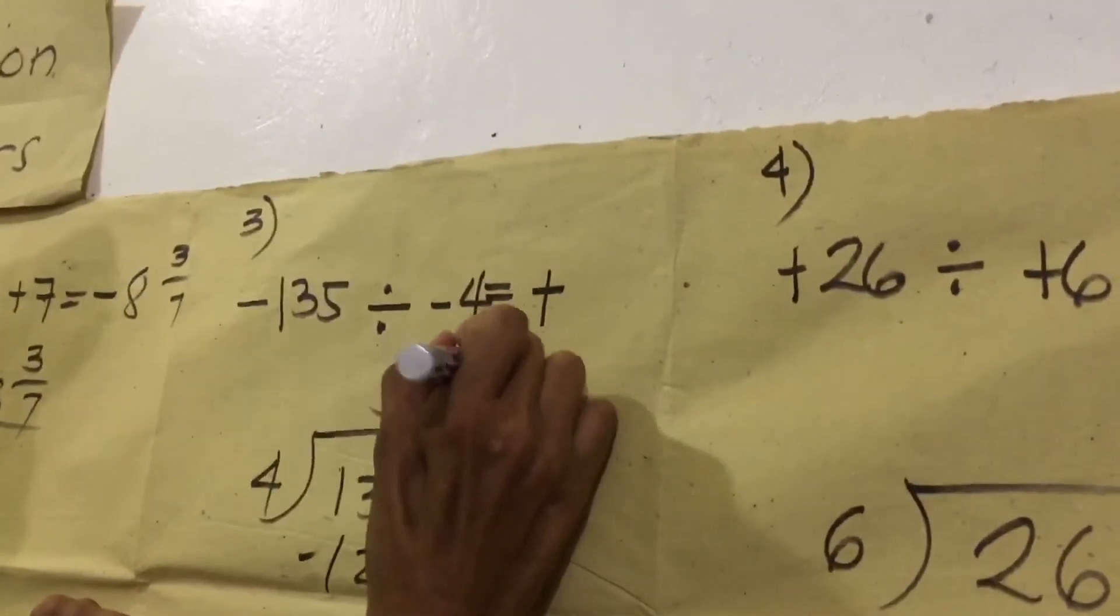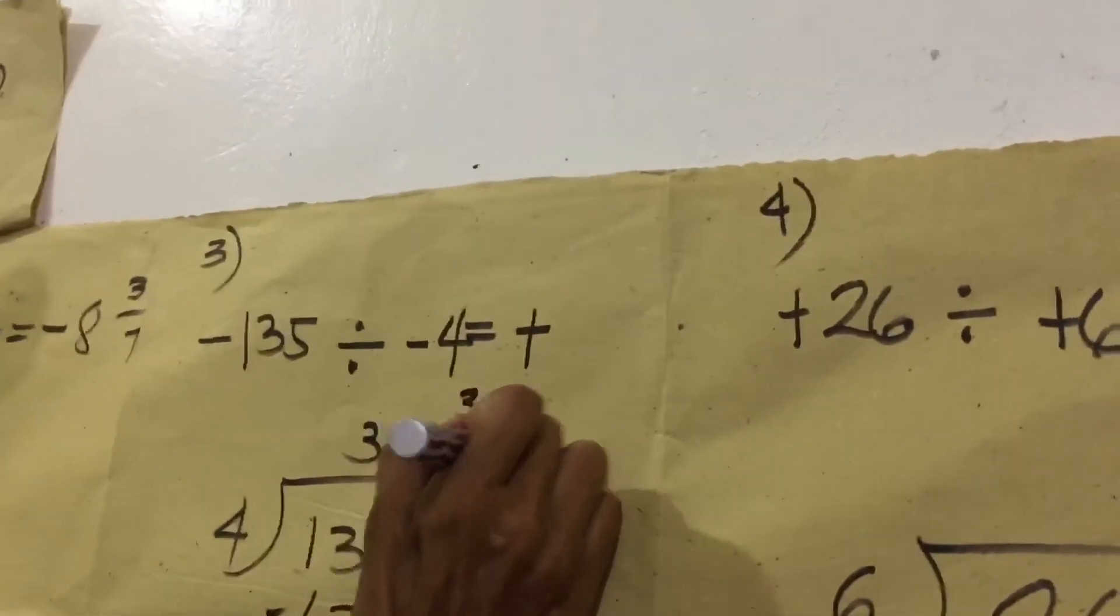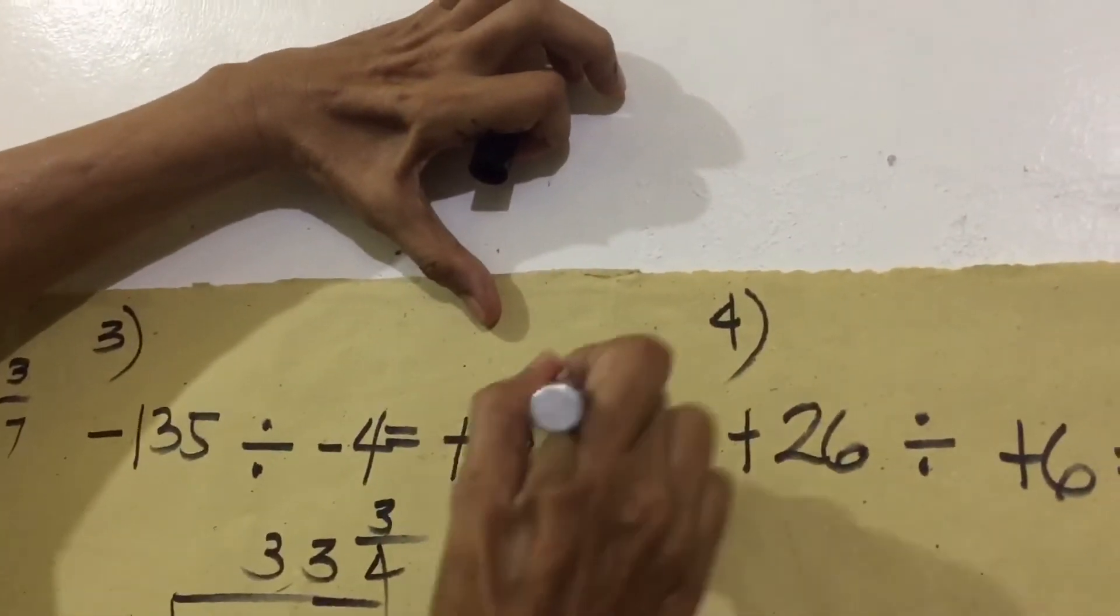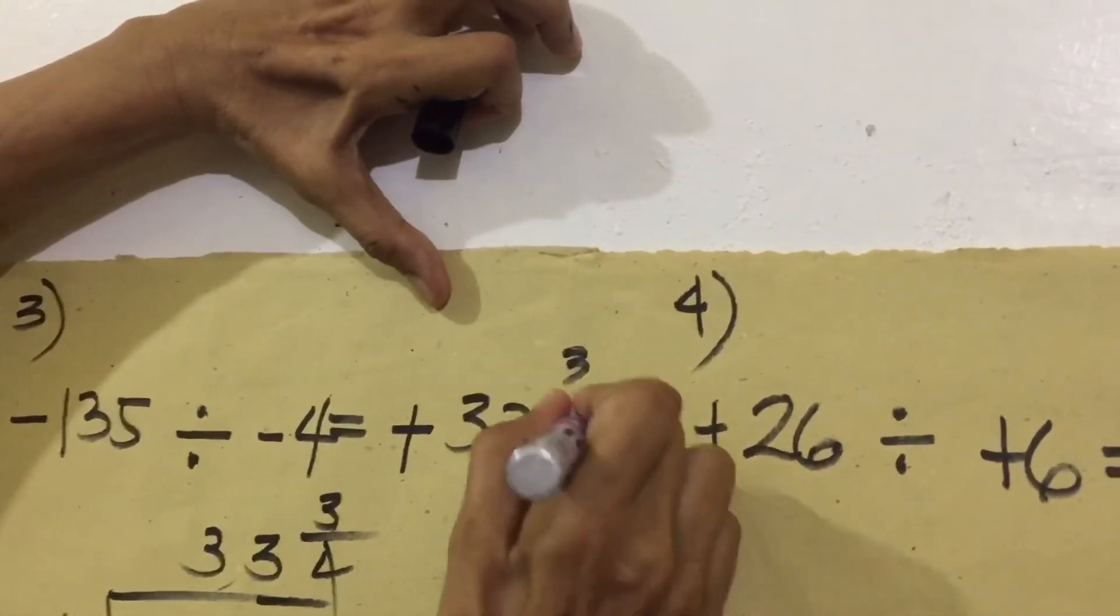So, our answer is 33 and 3, 4. Write your answer here. We have positive 33 and 3, 4.